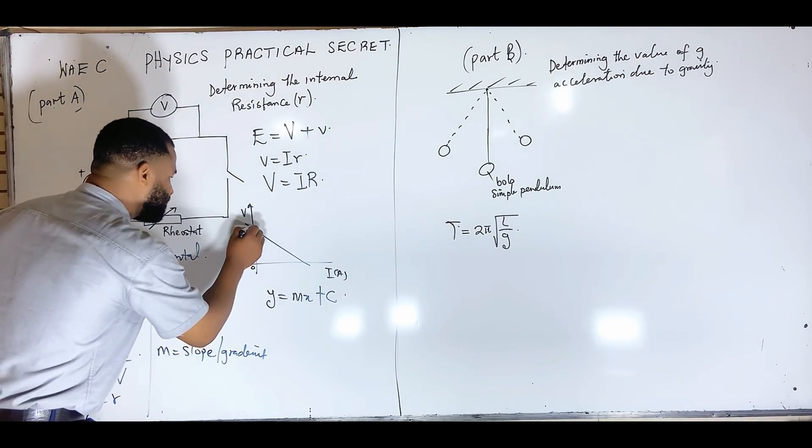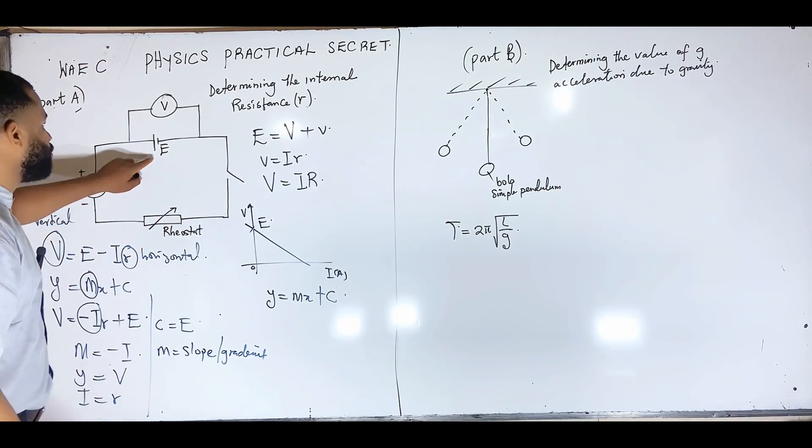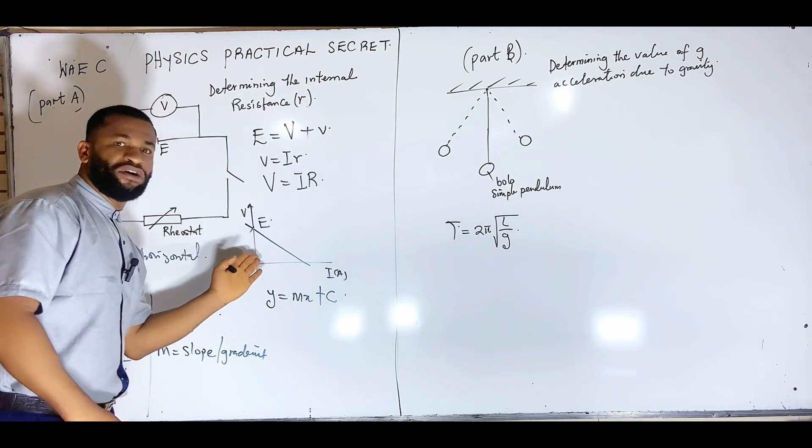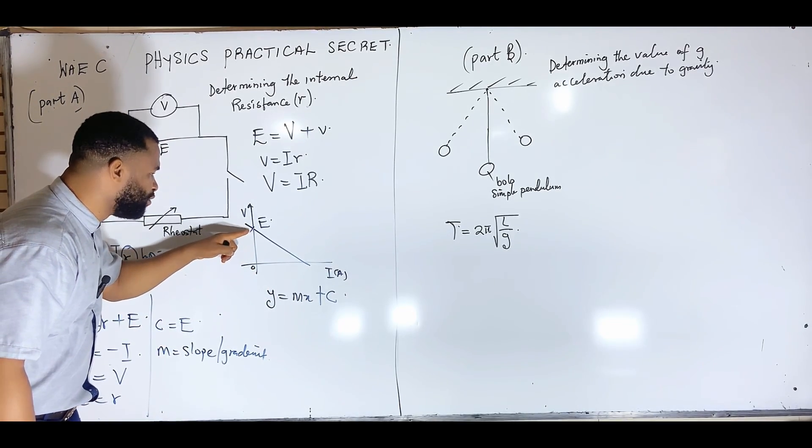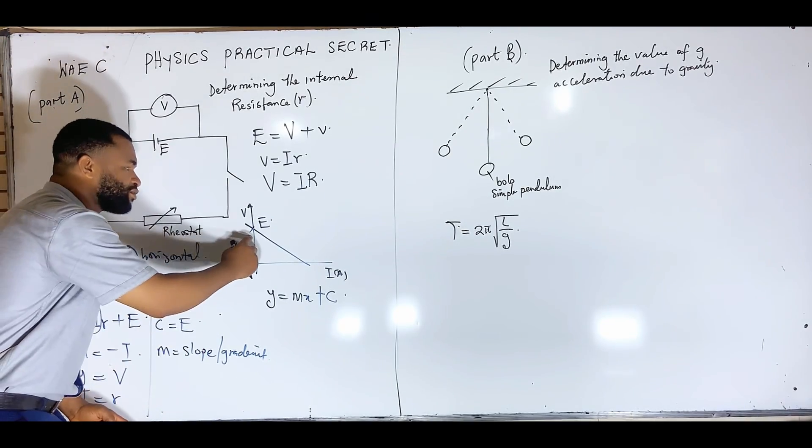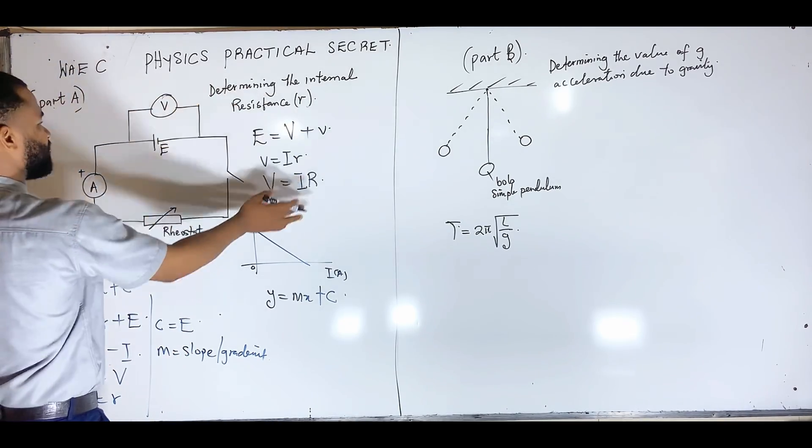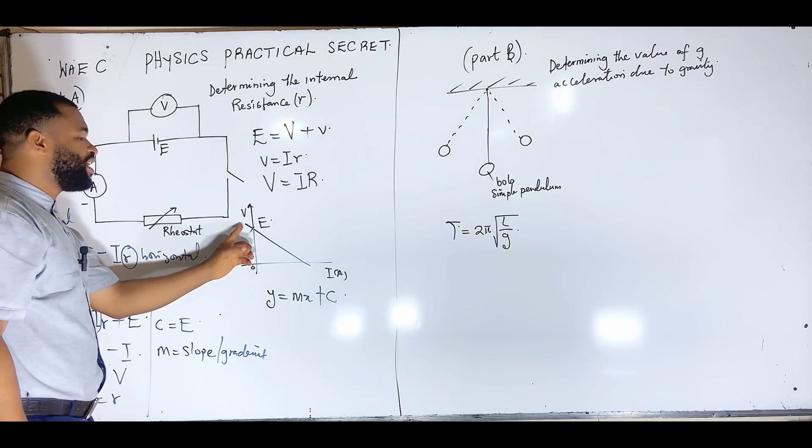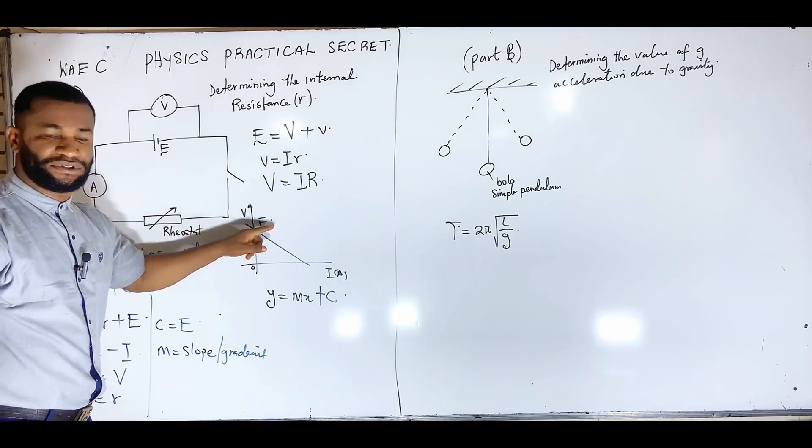The question is, what is this? This place is where my E is. That means the value of my battery can be gotten from the vertical intersection of the graph when I plot it. And that is why this E is coinciding with the vertical because this C has to do with the vertical intersection of the graph.